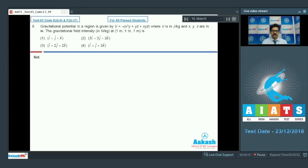Question 9: Gravitational potential in a region is given by v equals minus x squared y minus yz minus xyz, where v is in joule per kg and xyz are in meter. The gravitational field intensity in newton per kg at position (1,1,1) is? From the relationship between gravitational intensity and potential, you know gravitational field is the negative of gravitational potential gradient.